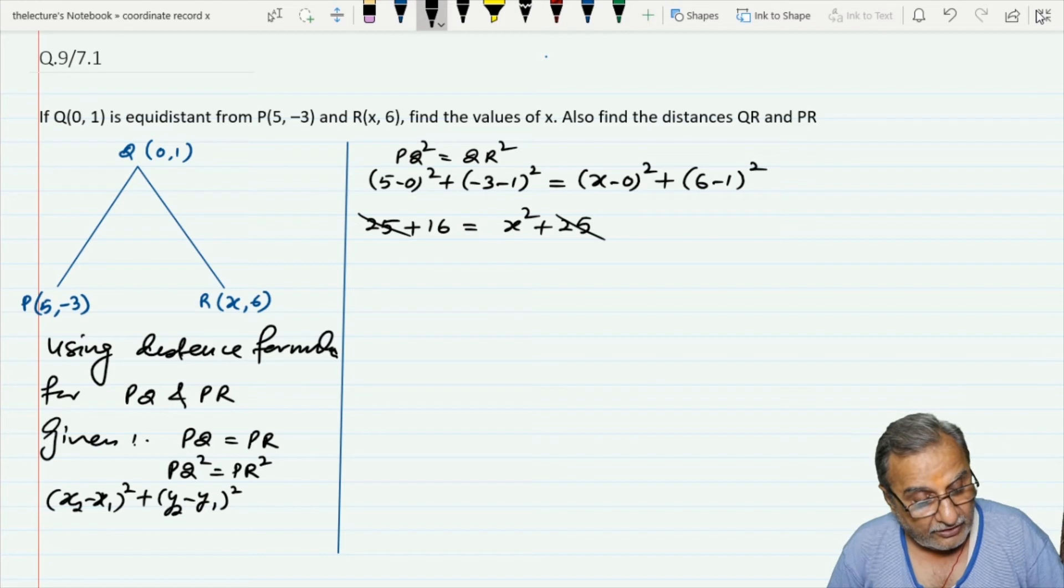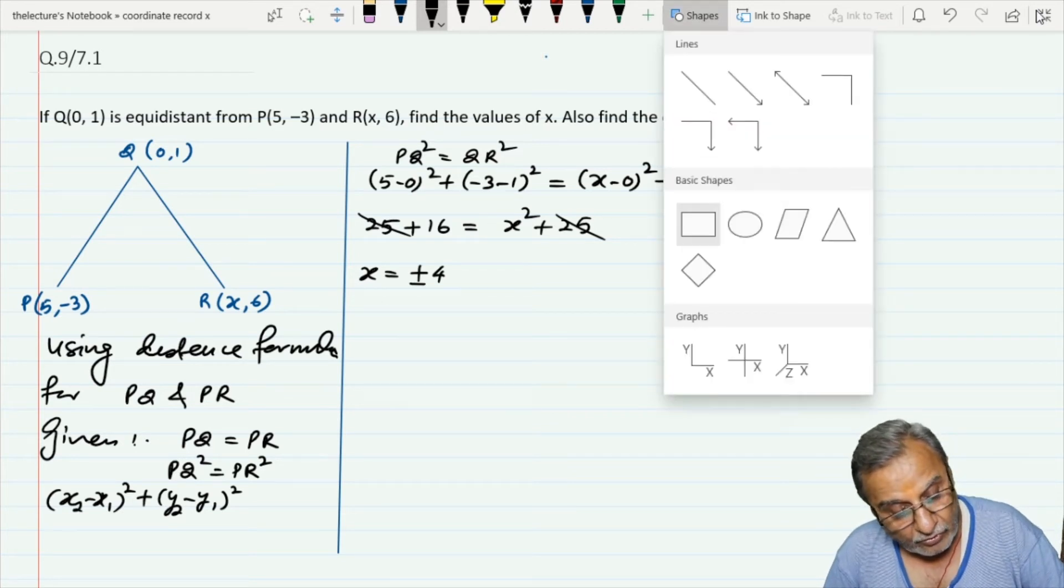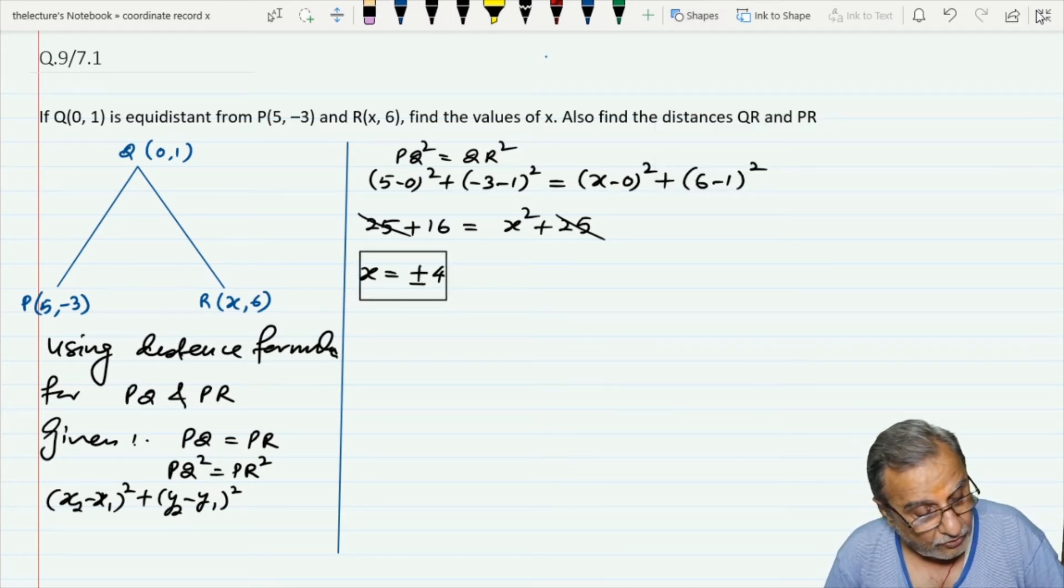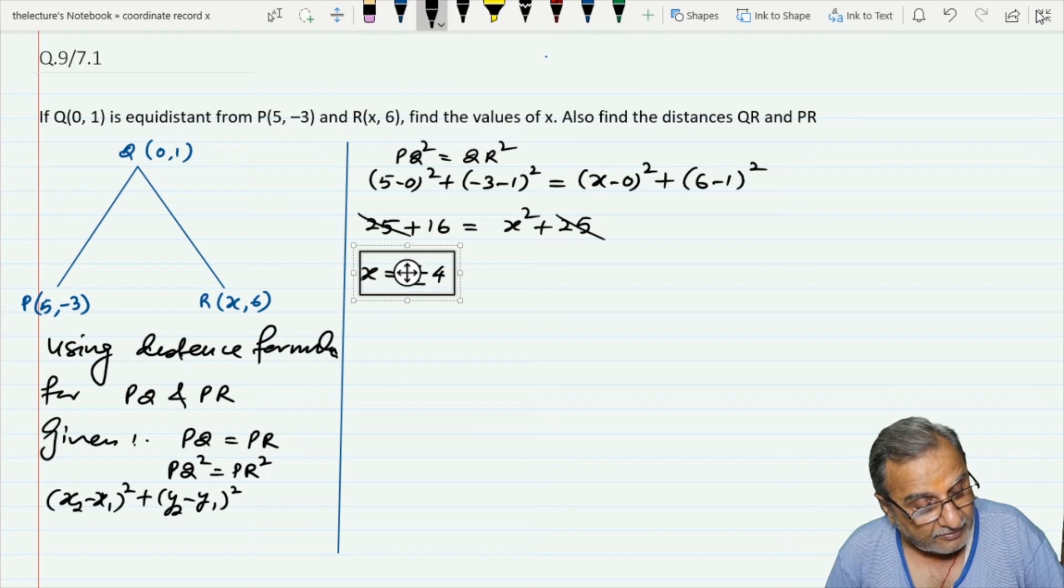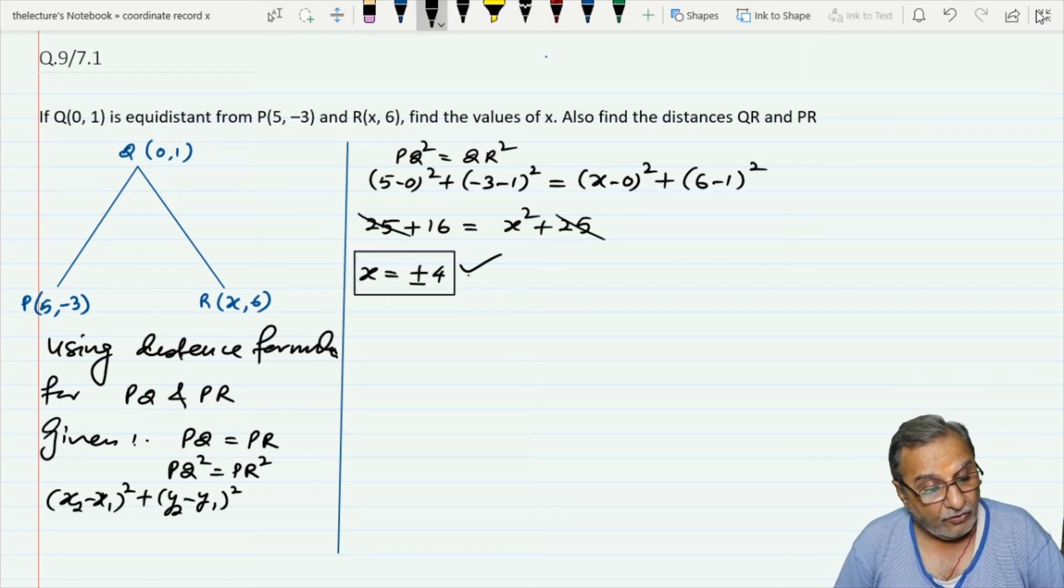Canceling 25 from both sides, I get x² = 16, so x = ±4 after taking the square root. I will take the positive value, so x = 4.